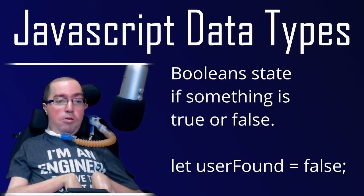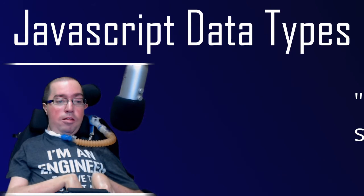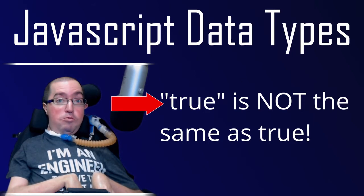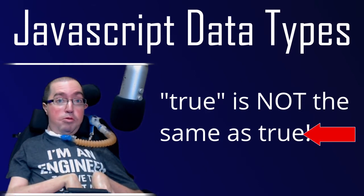Booleans are nothing more than stating if something is true or false, like what you see here. Again, be aware that true in quotation marks is not the same thing as simply stating true — the first is a string, the second is a boolean.